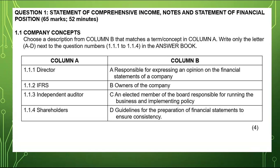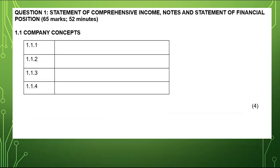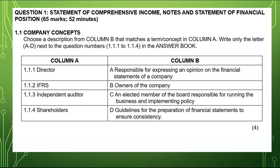It starts with company concepts. You need to choose a description from column B that matches a term or concept in column A, and write only the letter A to D next to the question number from 1.1 to 1.4 in the answer book. So for 1.1, if you think it's A, you just write A next to it.